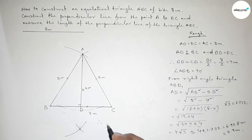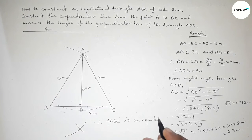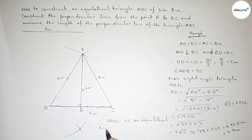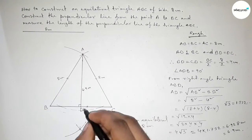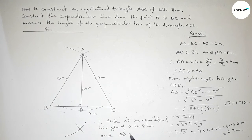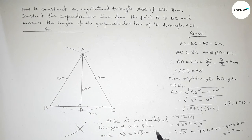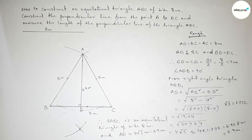Therefore, ABC is an equilateral triangle of each side 8 centimeter, and the length of the perpendicular line AD equals 6.9 centimeter approximately. That's all — thanks for watching. If this video is helpful to you, please share it with your friends.